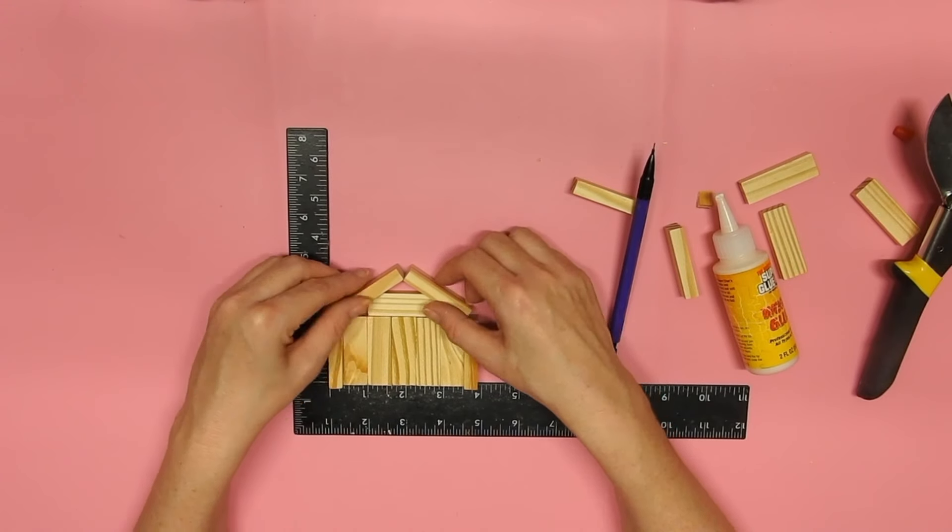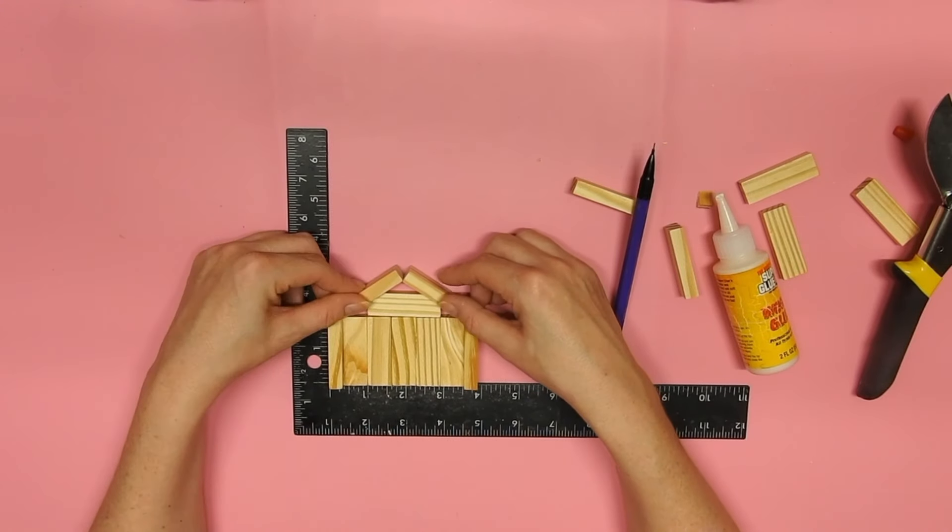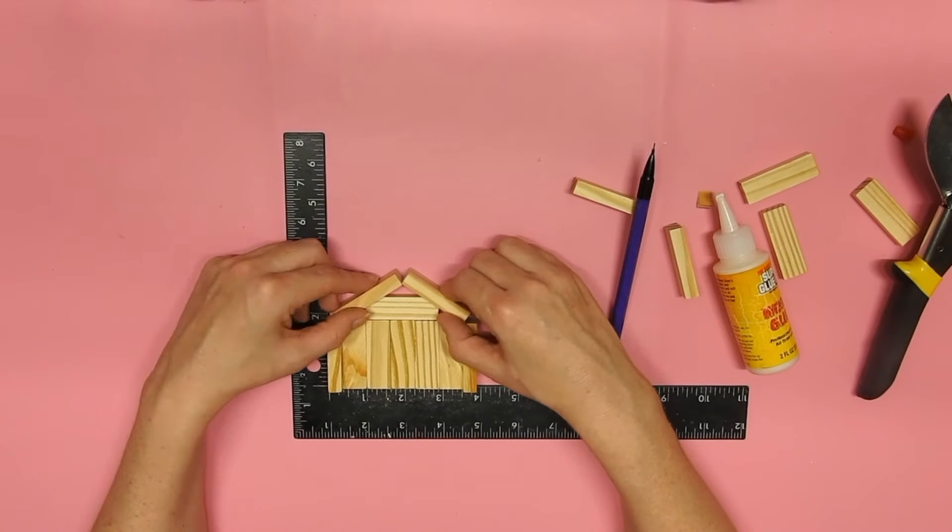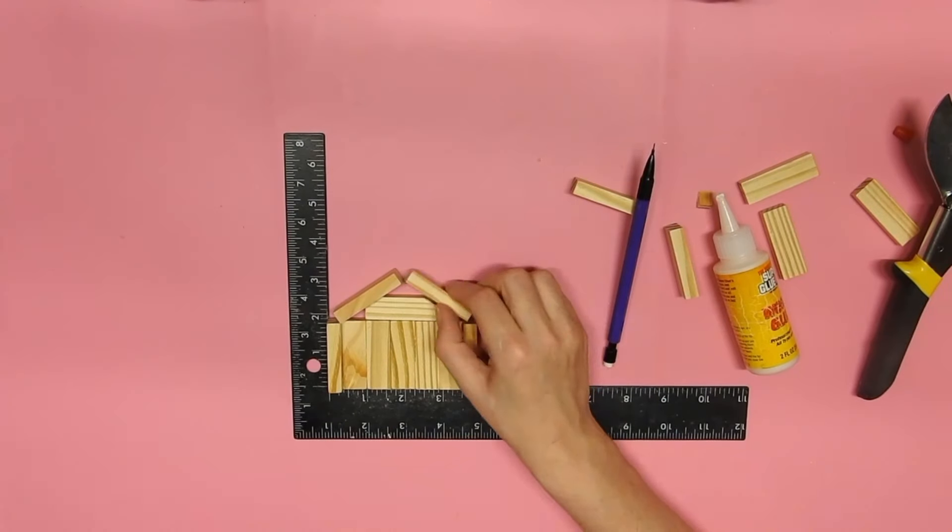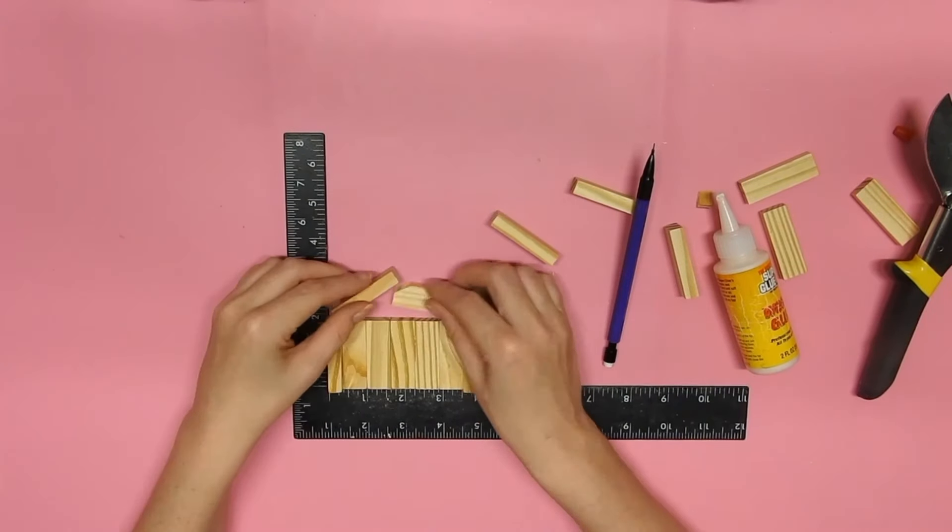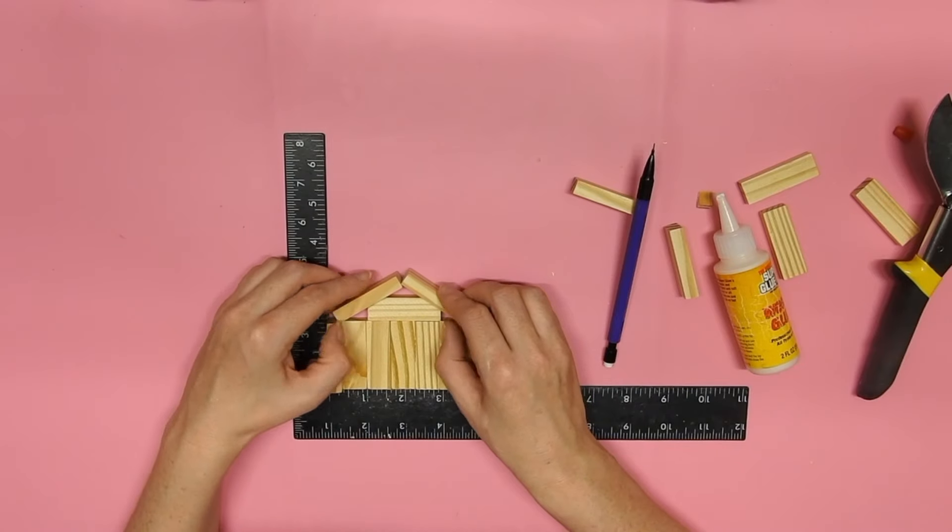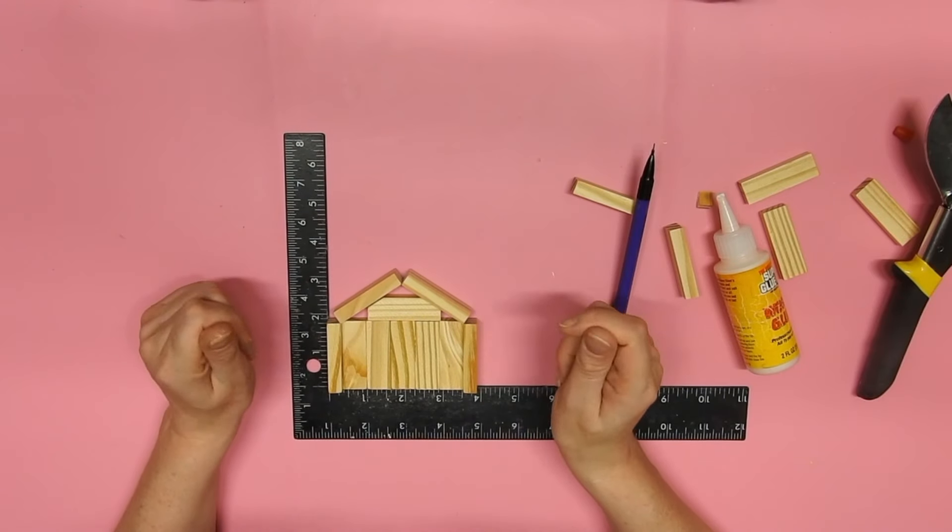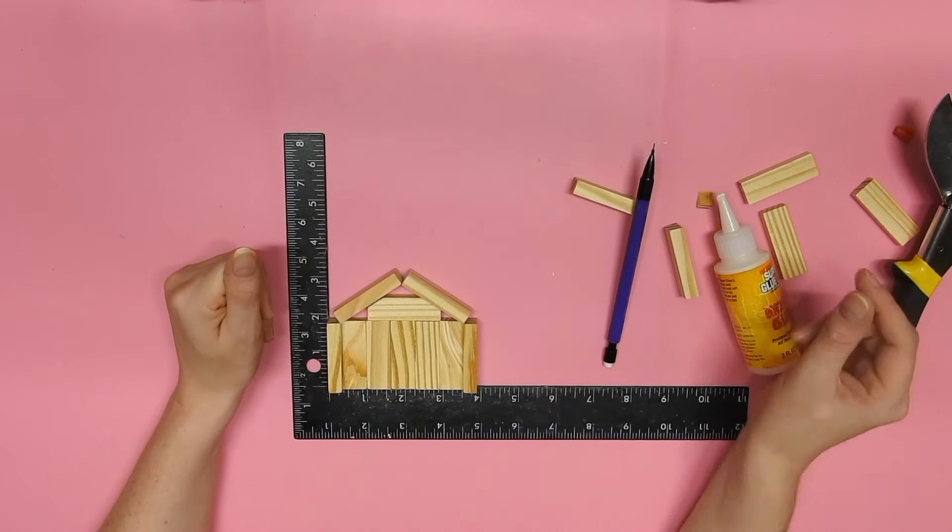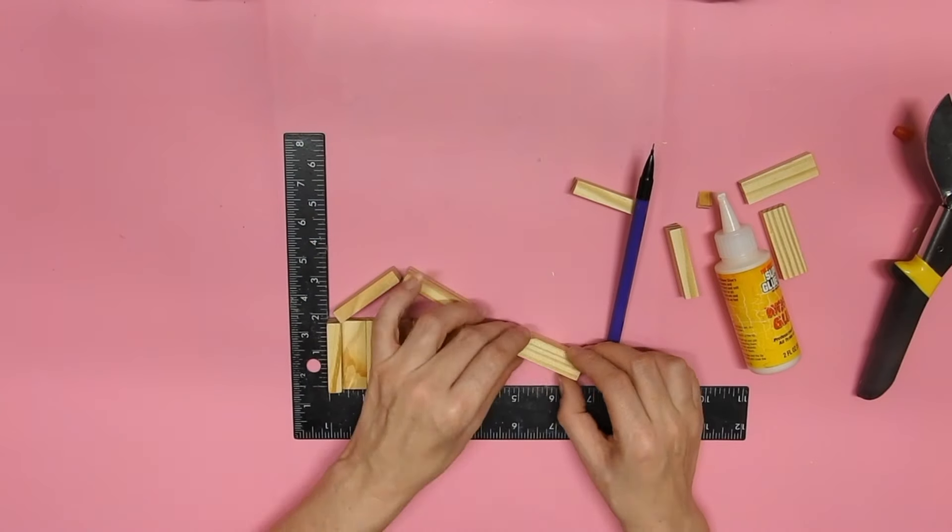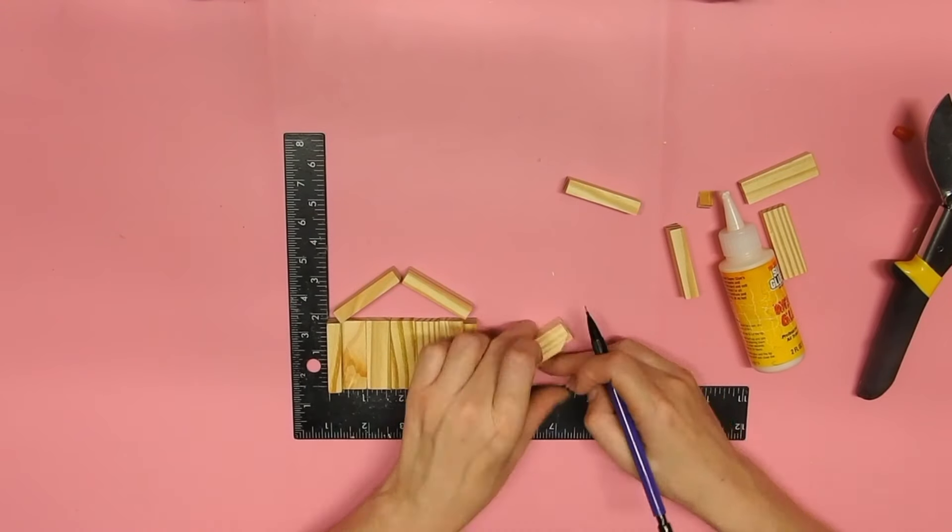It was easy to cut them but the measuring part, getting it right wasn't so easy. You can see me fiddling around with it. So I ended up taking another block and then marking it off so that I didn't cut quite as much off. And then that fit better.